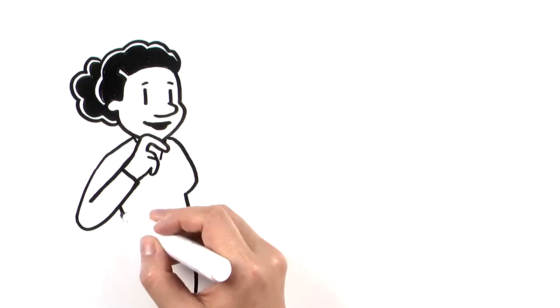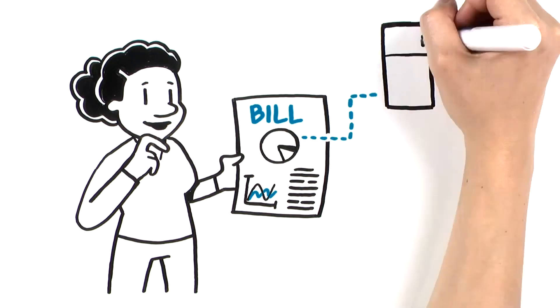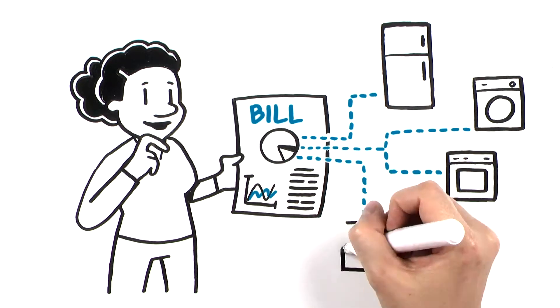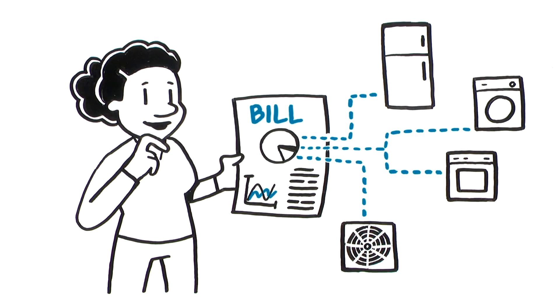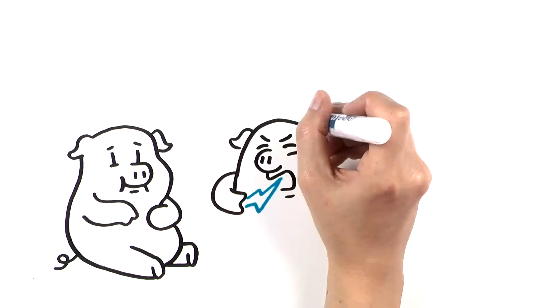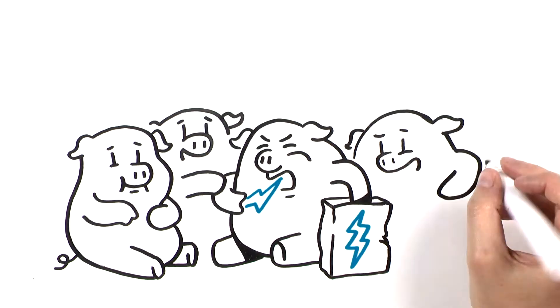Want to control your electricity costs at home? You can start by understanding how much power is used by your appliances. Let's discuss the top four energy hogs and ways to keep your costs in check.